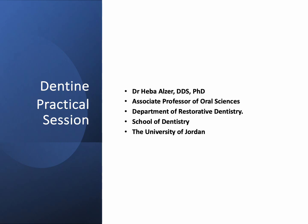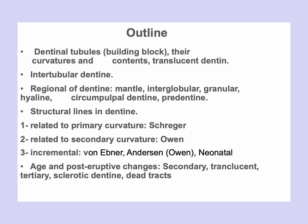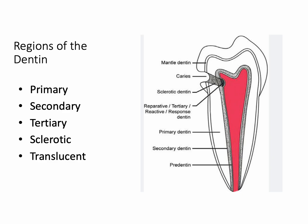Welcome to Part 4 of the dentine practical session. In this session we are going to discuss the age and post-eruptive changes in dentine. The subjects we are going to discuss are primary, secondary, tertiary, sclerotic, and translucent dentine — these are all types of dentine and the changes that happen to them.